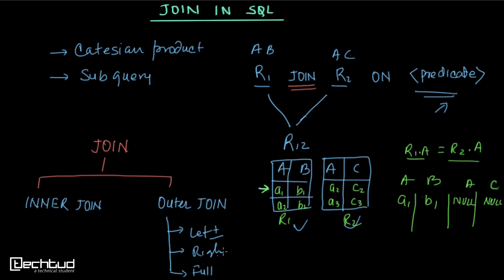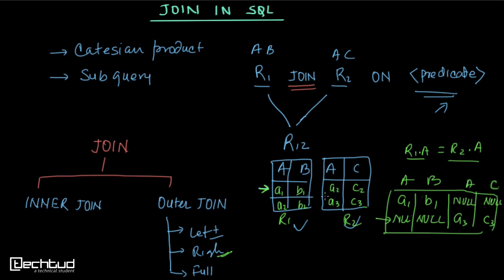In case of right outer join, we will have all records from the right table. For example, for A3 we don't have anything matching in the left table, but still we will have A3 and C3 with null, null, null for the left side. In full outer join we will have all records from both tables, and whenever there is no matching row in the other table we put null.